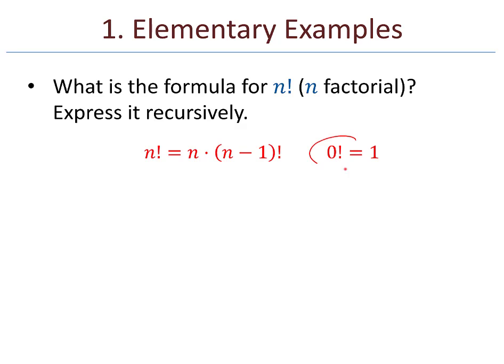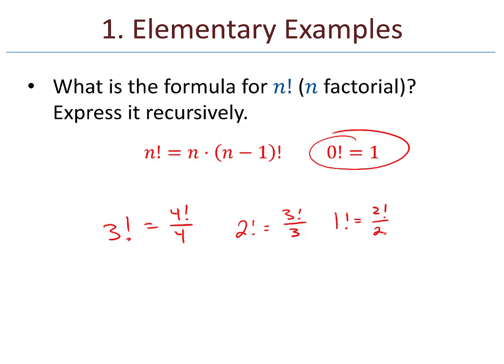Now, there's a base case to consider, and that is 0 factorial equals 1. A lot of people find this confusing. But here's a slight justification: you could define 3 factorial as 4 factorial divided by 4, and 2 factorial as 3 factorial over 3, and 1 factorial as 2 factorial over 2. We conclude that 0 factorial is 1 factorial over 1, which just equals 1.